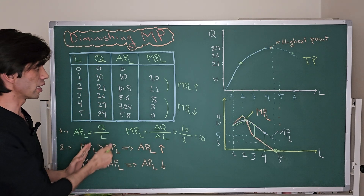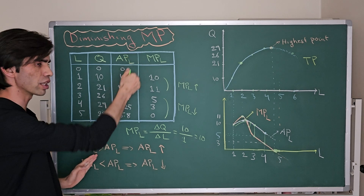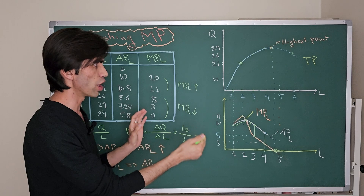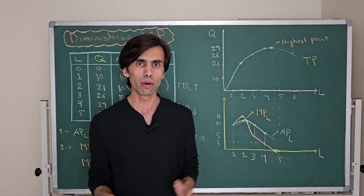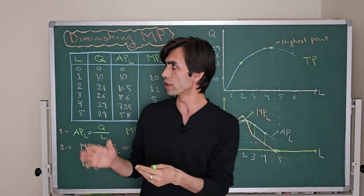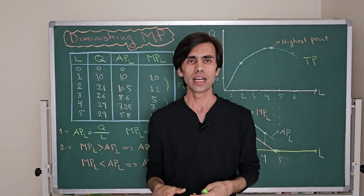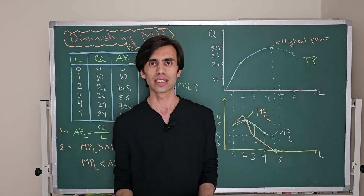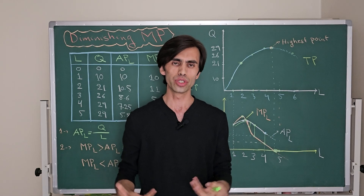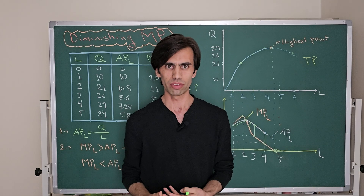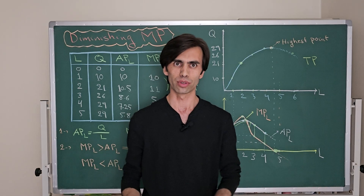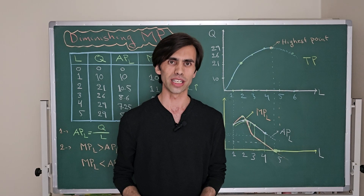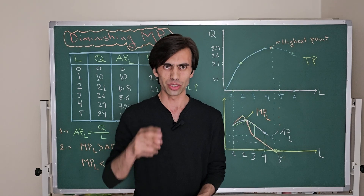So this is the numerical example for finding average product of labor, marginal product of labor, and the relationship between average, marginal, and total product of labor. I hope now you understand the law of diminishing marginal product of labor and the relationship between marginal product, average product, and total product when using labor as a factor of production. I hope this video will be helpful for you. Consider subscribing to see more videos from my YouTube channel. See you next time.